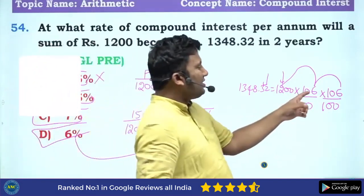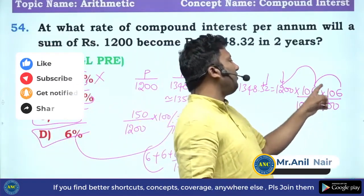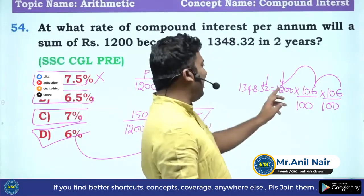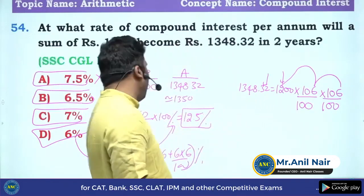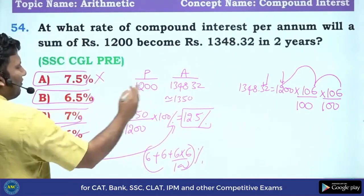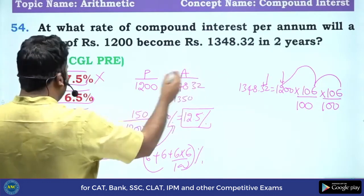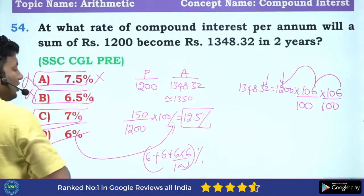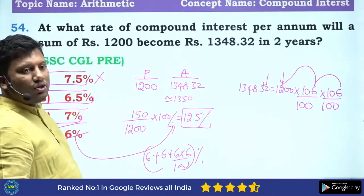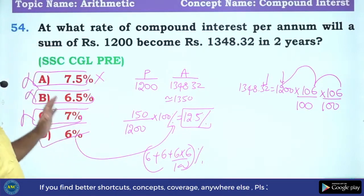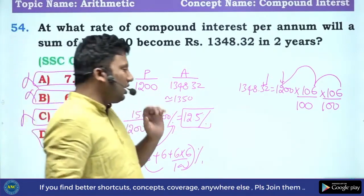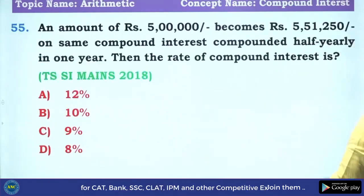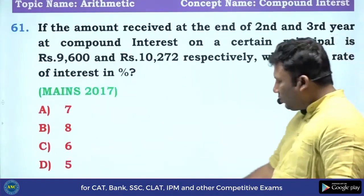If I take 7%: 7 sevens are 49, unit digit 9; then 9 twos are 18 — digit 8 is not matching with 2 in the given amount. For 5%: 5 fives are 25, 5 twos are 10 — this will not match either. So using the rightmost non-zero digit approach, the answer is confirmed as 6%. I hope the idea is crystal clear to you.